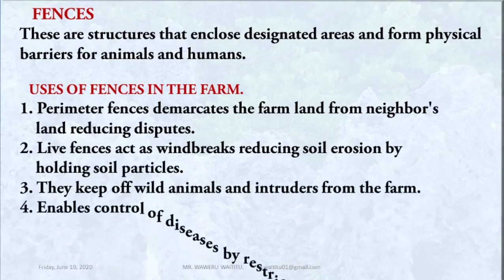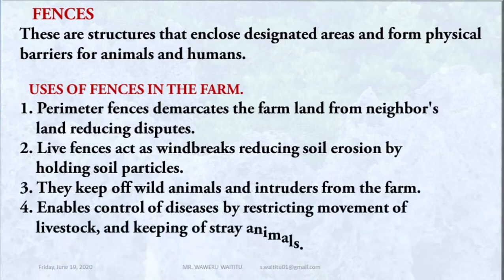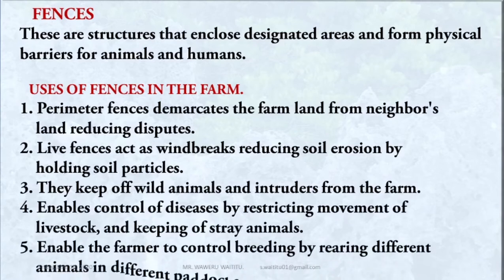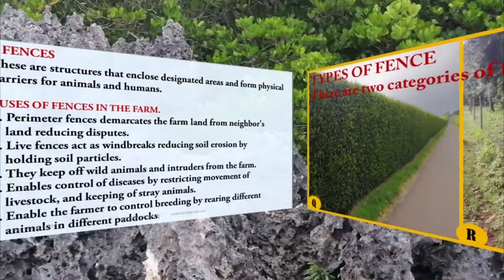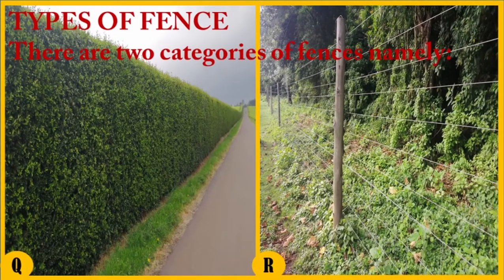Number four, fences enable the control of diseases by restricting movement of livestock and keeping out stray animals. Number five, fences enable the farmer to control breeding by rearing different animals in different paddocks. There are two categories of fences, namely life fences and dead fences.